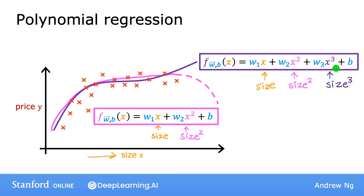These are both examples of polynomial regression because you took your original feature x and raised it to the power of 2 or 3 or any other power. And in the case of the cubic function, the first feature is the size, the second feature is the size squared, and the third feature is the size cubed.